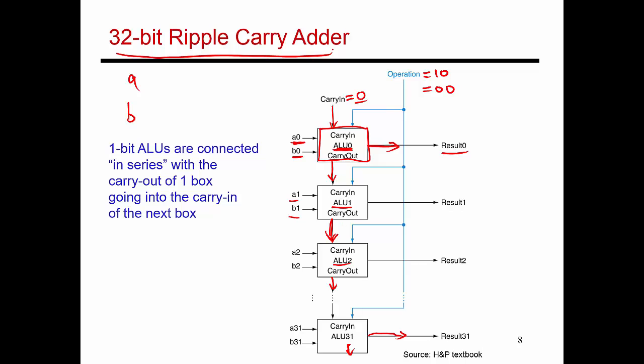This ALU operation also takes a little extra time. Going through one of these blocks requires close to a handful of gate delays. Once you provide the inputs, a handful of gate delays later an output comes out, then a few gate delays later the next output comes out, and so on. The delay for the entire add operation is going to be 32 times the delay for each of the 1-bit ALUs. So this is certainly more time consuming than the basic 1-bit ALU we designed before.